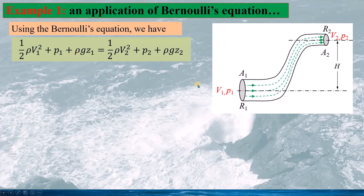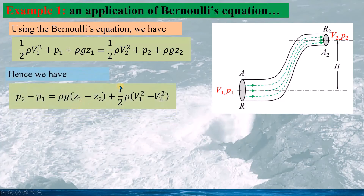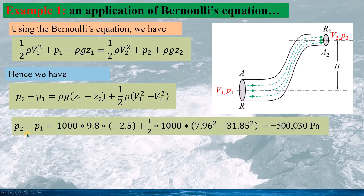Based on Bernoulli's equation, the three terms at A1 added together equal a constant, and similarly the three terms at A2 must equal the same constant. Therefore we calculate P2 minus P1. Since Z1 is at the lower position and Z2 is at the higher position, Z1 minus Z2 equals minus h. Substituting all values, the pressure difference P2 minus P1 is approximately minus 500 kPa.